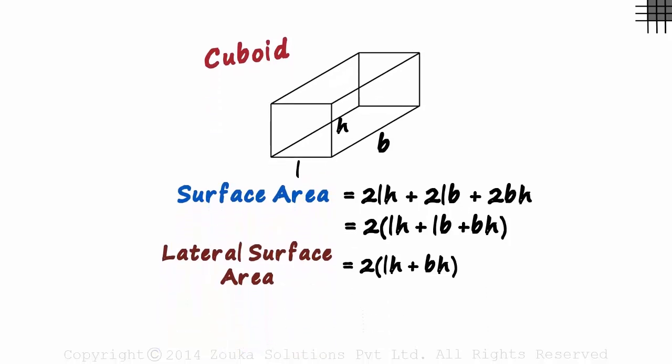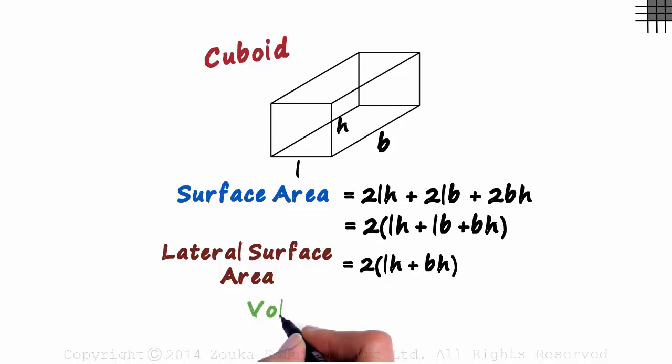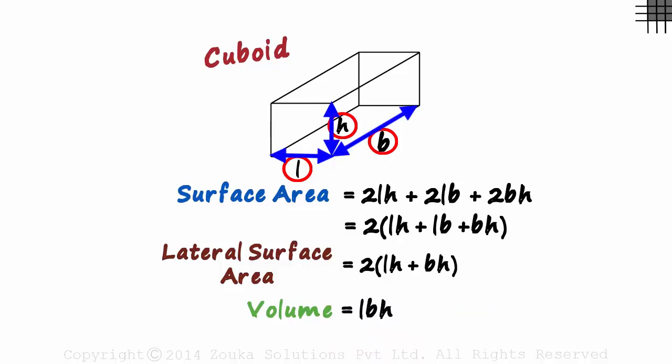The last concept is that of its volume. The volume of a cuboid is simply the product of its length, its breadth, and its height. To be more specific, it is the area of its base times its height.